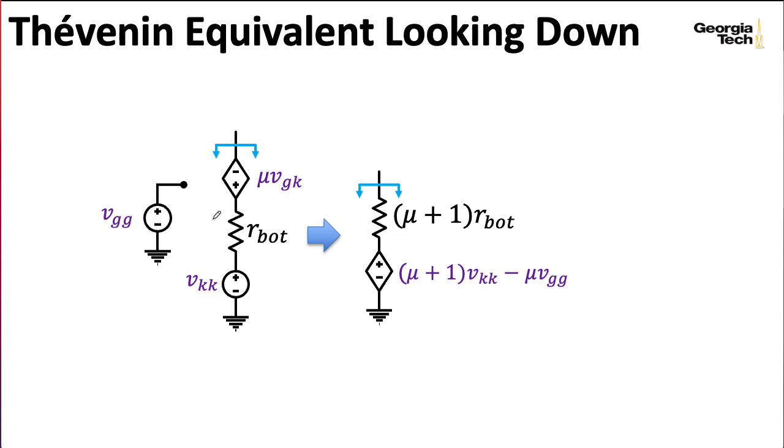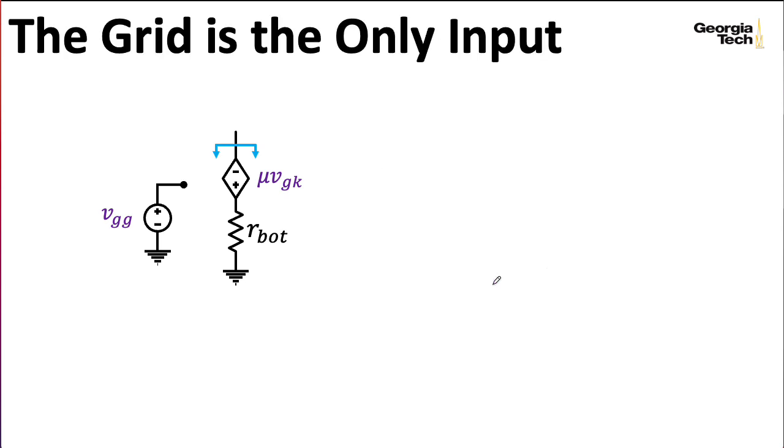So, in this particular case, we only have voltage coming in through the grid. VKK is zero, so we don't really have this term. So, our Thevenin equivalent reduces to something like this. Okay, so now let's take this Thevenin equivalent and substitute it into our small signal model for the common cathode amplifier.